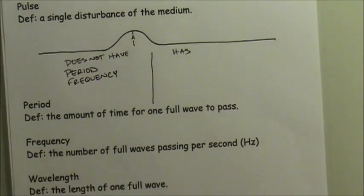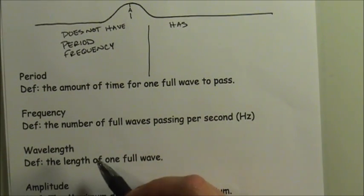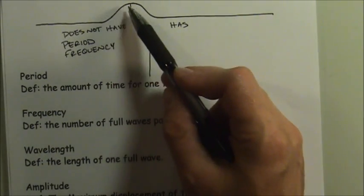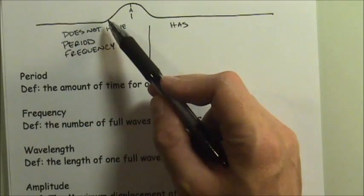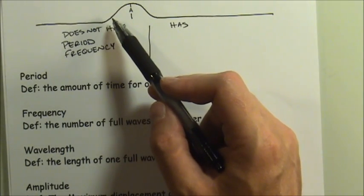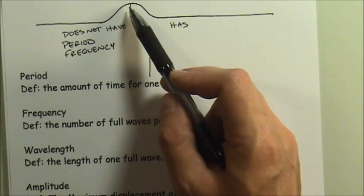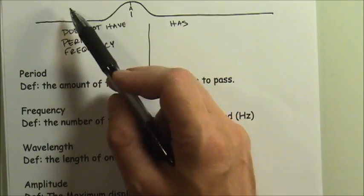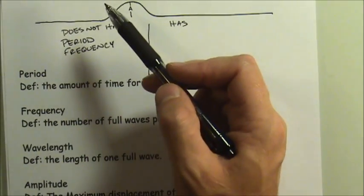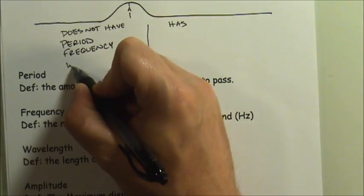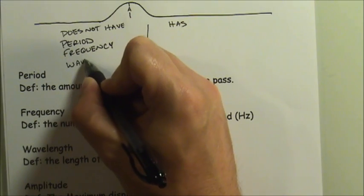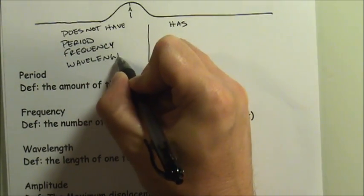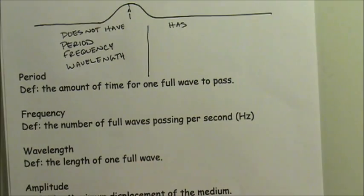The wavelength is the length of one full wave. It might seem like a pulse is one full wave, but normally I would measure it by going from one crest to the next successive crest. Since there is no successive crest, there is really nothing that corresponds to the wavelength - a pulse has no wavelength.